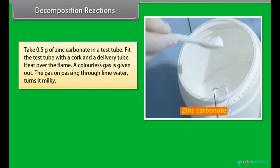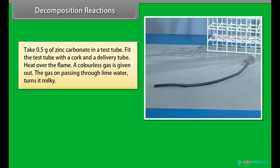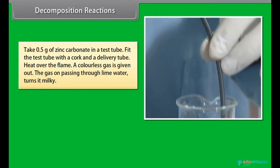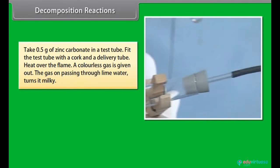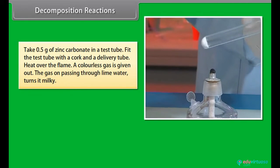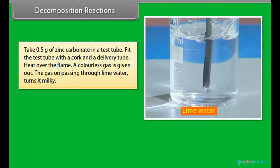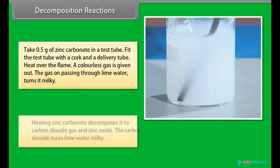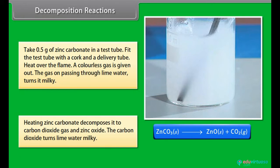Take 0.5 gram of zinc carbonate in a test tube. Fit the test tube with a cork and a delivery tube. Heat over the flame. You will see a colourless gas is given out. The gas on passing through lime water turns it milky. Heating zinc carbonate decomposes it to carbon dioxide gas and zinc oxide. The carbon dioxide turns lime water milky.